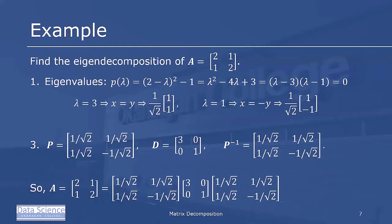Let's try an example. We'll find the eigendecomposition of matrix A [2, 1; 1, 2]. Finding the eigenvalues, we look at A minus lambda I, which means we end up with characteristic polynomial P of lambda, 2 minus lambda squared minus 1, which we can factor to (lambda minus 3)(lambda minus 1) equals 0.